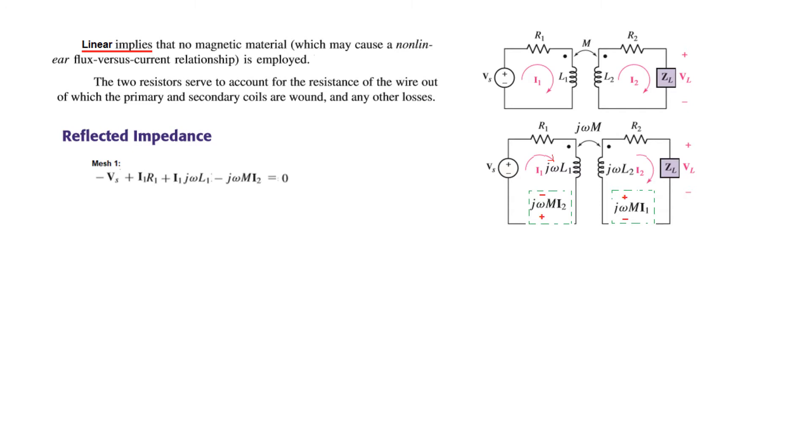Now let's find the voltages. We take mesh 1, starting from one corner. The voltage is minus Vs plus I1 R1 plus I1 j omega L1. This voltage is coming first, so we write minus j omega m I2. Rearranging, this can be written as Vs equals I1 times R1 plus j omega L1 minus j omega m I2.